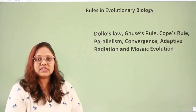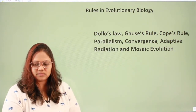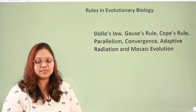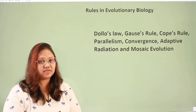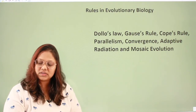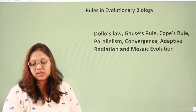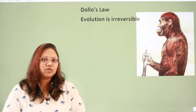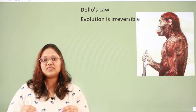Rules in evolutionary biology include: Dollo's Law, Gauss's Rule, Cope's Rule, parallelism, convergence, adaptive radiation, and mosaic evolution. Out of all these, what we are going to learn today is Dollo's Law. To simplify it: Dollo's Law states that evolution is irreversible.